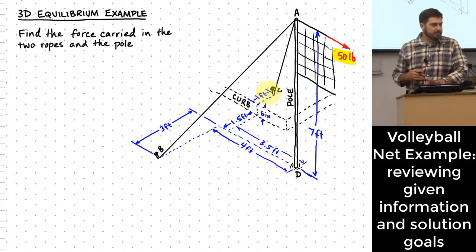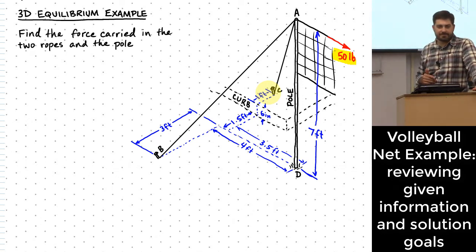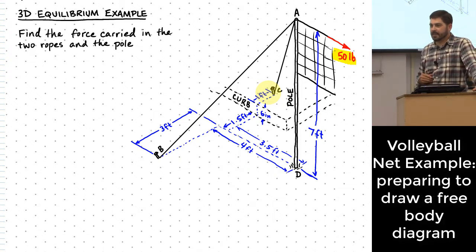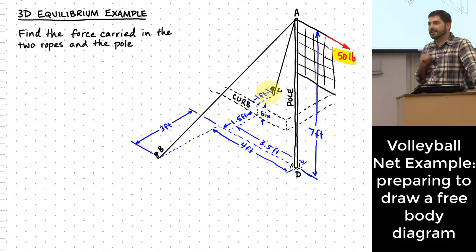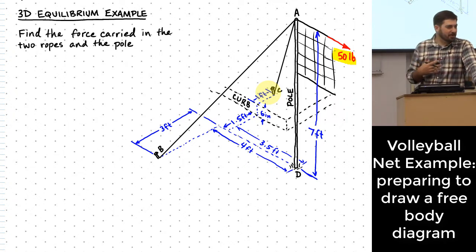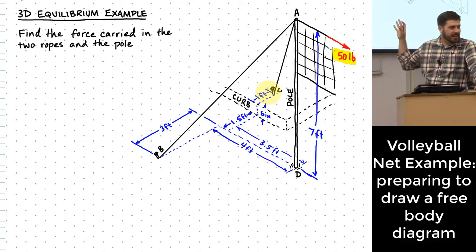Someone says draw a free body diagram. Drawing a free body diagram for a setup like this is a lot easier if you've got an isometric dot grid. Some of you are trying to take notes right now and your notes probably aren't turning out great. If you don't feel like your notes are turning out well, it might be worthwhile to print off some isometric dots and keep a few sheets in your binder.